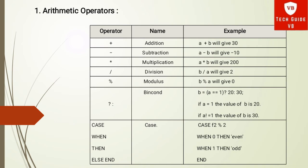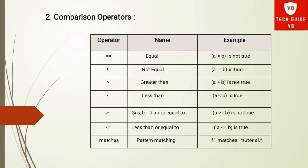The next arithmetic operator is the CASE operator, which is equivalent to the nested bincond operator. For example: CASE f2 mod 2 — when the expression gives 0, it is even; when the expression gives 1, it is odd. That concludes the arithmetic operators.